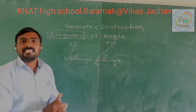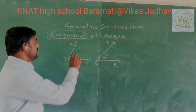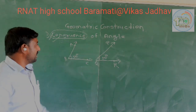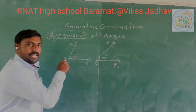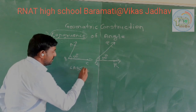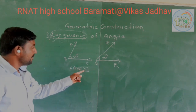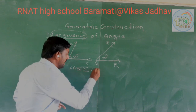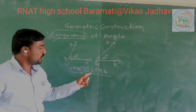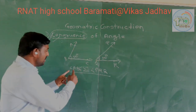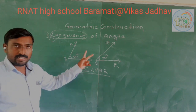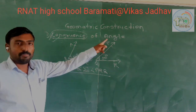It means these 2 angles are congruent angles. And it can be written as: angle ABC congruent to angle PQR. This is the symbol of congruence. This is the form for writing that these 2 angles are congruent.